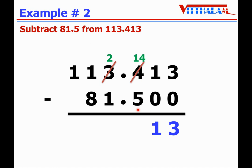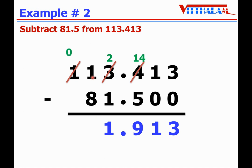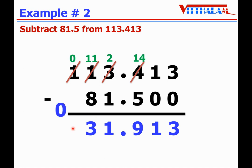14 minus 5 is 9. Then put the decimal point. 2 minus 1 is 1. 1 is smaller than 8, so it will borrow from the next digit — that 1 becomes 0 and this 1 becomes 11. 11 minus 8 is 3. So the required difference is 31.913.